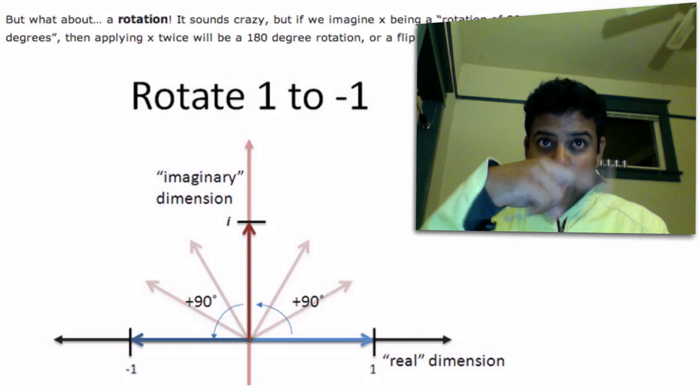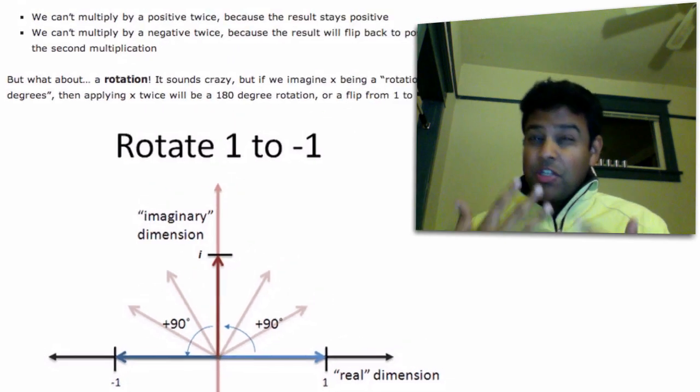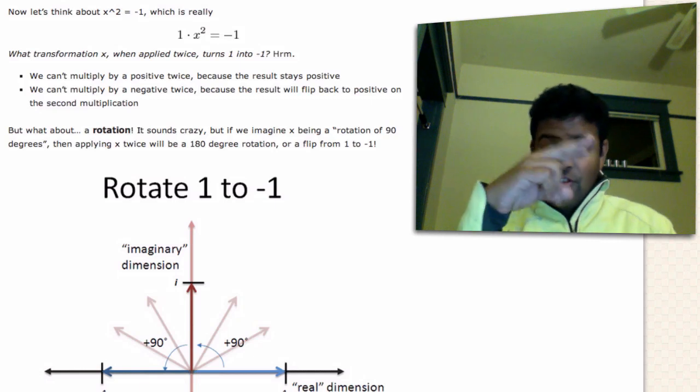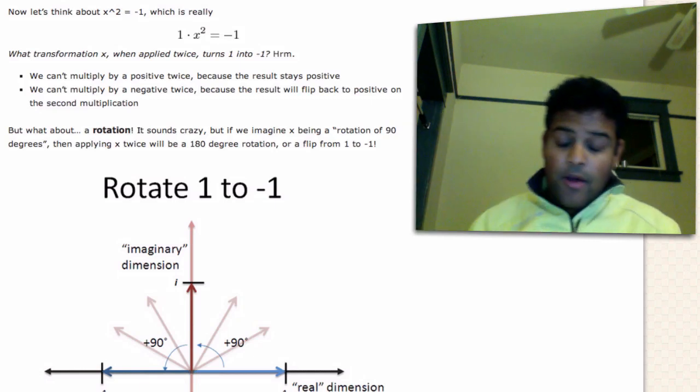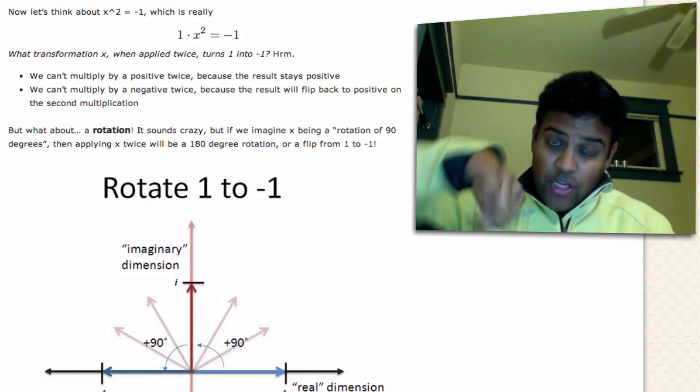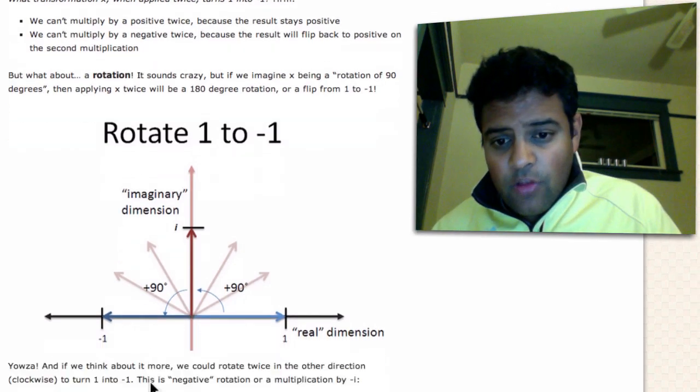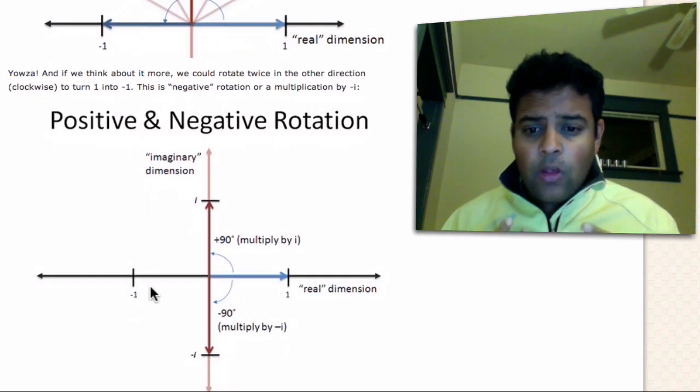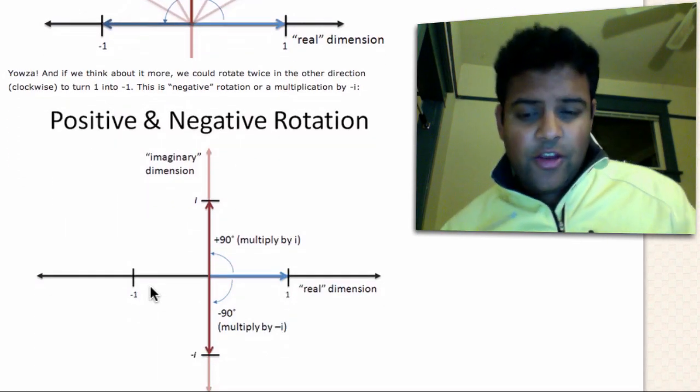Now, the neat thing is that you can rotate up or down, so there's actually two square roots to negative one. You can apply two rotations to the top or two rotations to the bottom. And by convention, we call the top rotation, we call that positive, and the bottom rotation, we call that negative i. So those are just two different ways to get to the same endpoint. So this is really the key insight here.